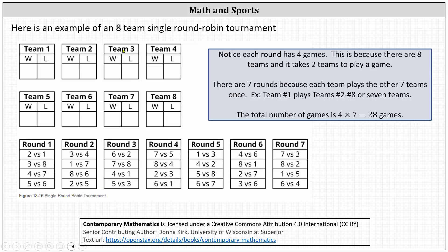Here's an example of an eight team single round robin tournament. Each of the eight teams will have a win-loss record. Each round has four games and there are seven rounds. There are four games per round because if there are eight teams, it takes two teams to play a game — eight divided by two equals four. There are seven rounds because each team plays the other seven teams once.